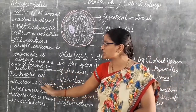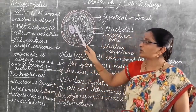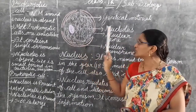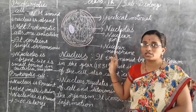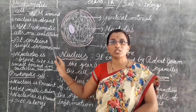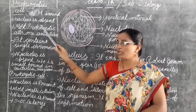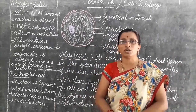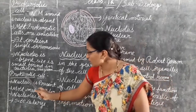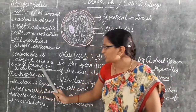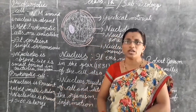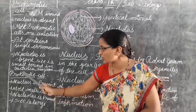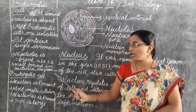The nucleolus is also absent in prokaryotic cells. A dot-like structure called a plasmid is present. Prokaryotic cells are smaller in size compared to eukaryotic cells. They are mostly found in bacteria and blue-green algae.